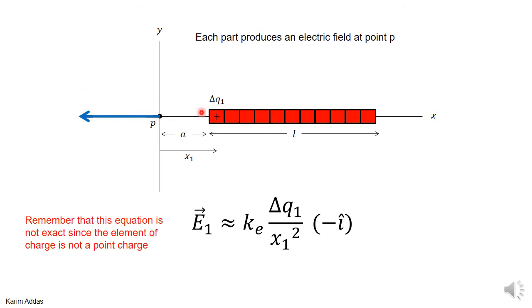Let's look at what the electric field would be due to the first element of charge at point P. It's going to be some vector, large vector to the left, and approximately the electric field due to the first element will be ke Δq1 over x1² in the minus i hat direction. x1 is the distance from the element to the point where you want to find electric field.